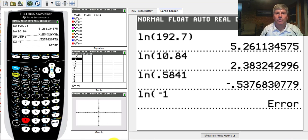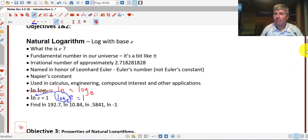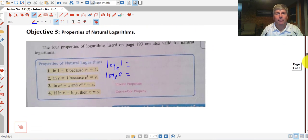Let's move on to objective 3 and talk about the properties of natural logarithms. The natural log of 1 equals 0, because natural log is log base e of 1. We're saying, what's the exponent on e that gets an answer of 1? Well, that is 0. e to the 0 is 1.